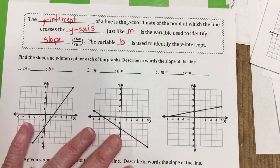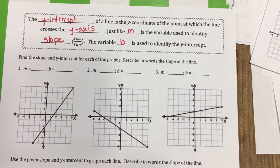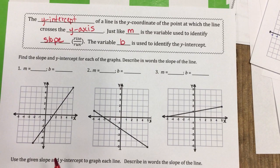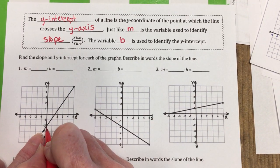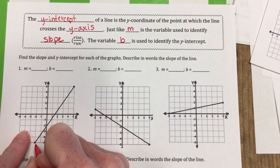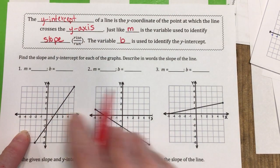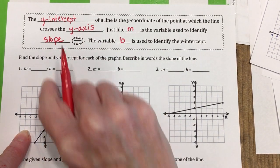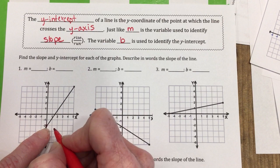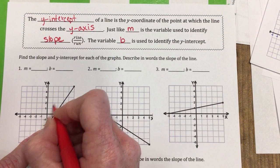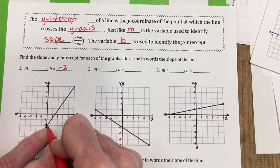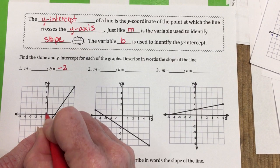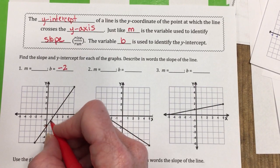Let's look at these graphs and find m and b. First, the y-intercept is where the line crosses the y-axis — not the x-axis, only the y-axis. The line crosses right here, so when y is negative... b is just the y-value, you don't need the whole point. It's when x is zero.